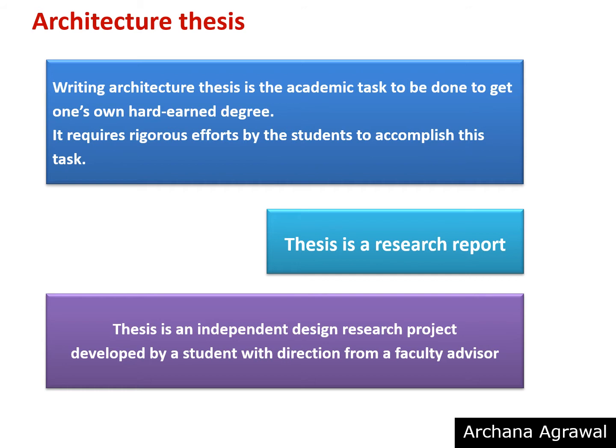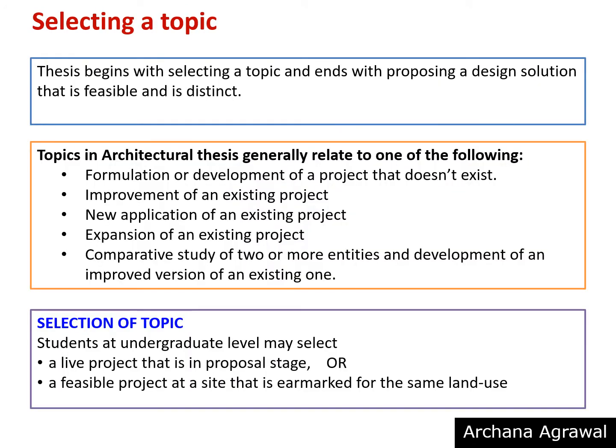Part 1 of this video series deals with the selection of topic. Thesis begins with selecting a topic and ends with proposing a design solution that is feasible and distinct. Topics in architectural thesis generally relate to: formulation or development of a project that doesn't exist, improvement of an existing project, new application of an existing project, expansion of an existing project, or comparative study of two or more entities and development of an improved version.